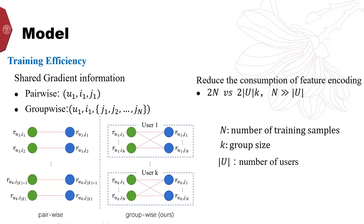That's the calculation of the matching scores. If there are n training samples, the pairwise approach needs 2n times, while our group-wise optimizer needs 2k multiplied by the number of users. Here, k is the group size. We usually set k as 32.